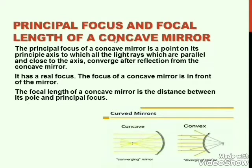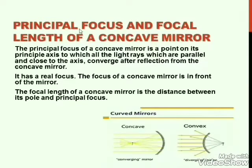Firstly we will study about the concave mirror. You can call principal focus as half of the radius of the spherical mirror, or half of the centre of curvature. There is a formula where principal focus is half of the centre of curvature — that is the radius, the distance of centre of curvature from pole. Focal length is the distance of principal focus from pole.